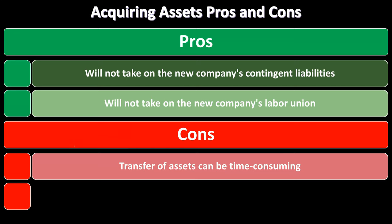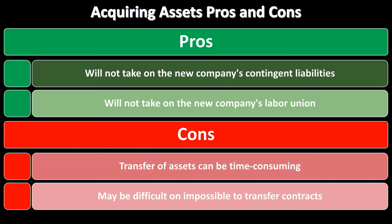The cons of acquiring assets: transferring assets can be time consuming, going line by line on asset values. It may also be difficult or impossible to transfer certain contracts — some intangible assets like favorable contracts may not be assignable, because the counterparty may say you can't transfer the rights of that contract to another company. Whereas if you acquired the entire company as a subsidiary, the contracts that company held would still remain valid.